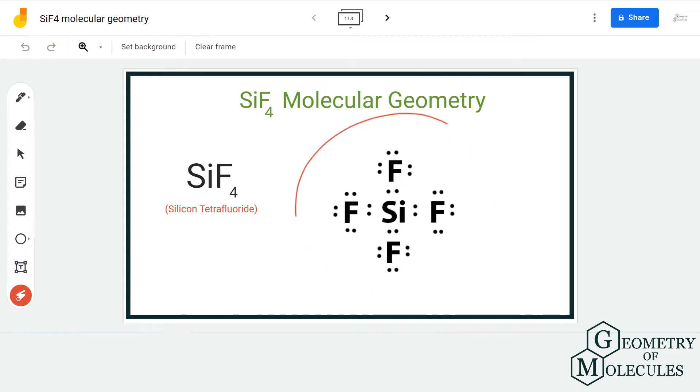So this is the Lewis structure of SiF4 in which the silicon atom is in the center and it is forming four single bonds with four fluorine atoms. Now to understand the molecular geometry better, we need to look at its 3D shape.